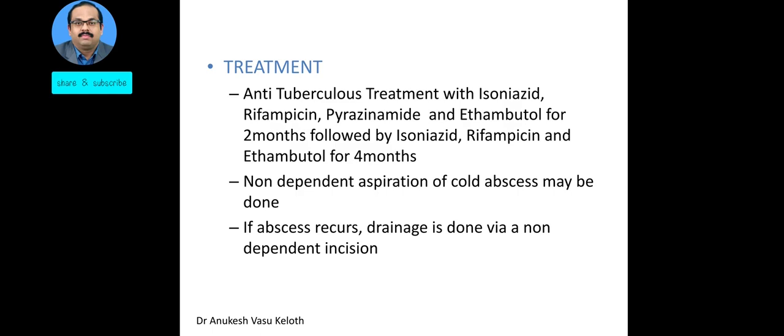Regarding treatment, once proven, anti-tuberculous treatment is started with isoniazid, rifampicin, pyrazinamide, and ethambutol for the initial two months. Later, isoniazid, rifampicin, and ethambutol are continued for a further four months. Usually by the third month the lymph nodes begin to reduce in size. It should be noted that in the initial one month of starting ATT, the size of the nodes may temporarily increase, but after that the size will reduce, and by the end of six months approximately 60–70% of the disease process will be resolved.